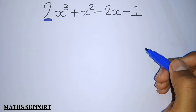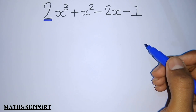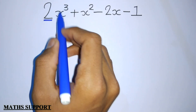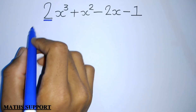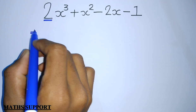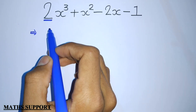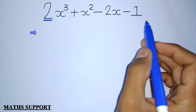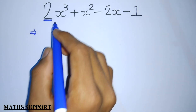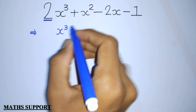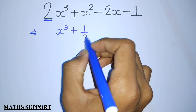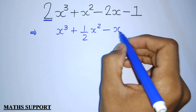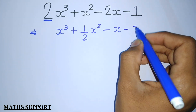Now let's discuss the special case: what if the coefficient of x cubed is not 1? We need to make it 1 first, so we divide the entire equation by 2. It becomes x³ + (1/2)x² − x − 1/2.